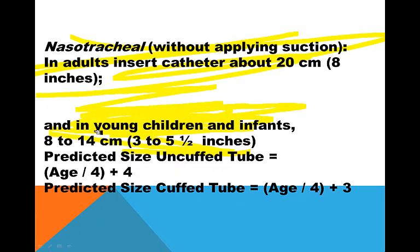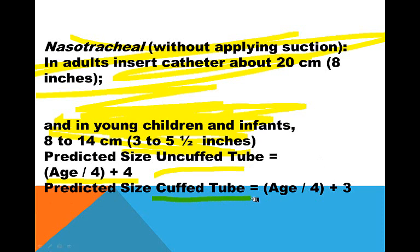We'll go with the more conservative estimate. The predicted size for uncuffed ET tubing: take the age divided by 4 plus 4. So if you have a 4-year-old, it's 4 divided by 4 plus 4, giving an ET tube size of 5. You're not going to use a cuffed ET tube under the age of 8 except in extreme circumstances. For a cuffed tube over the age of 8, it's the age divided by 4 plus 3. So uncuffed is plus 4, and cuffed is plus 3.